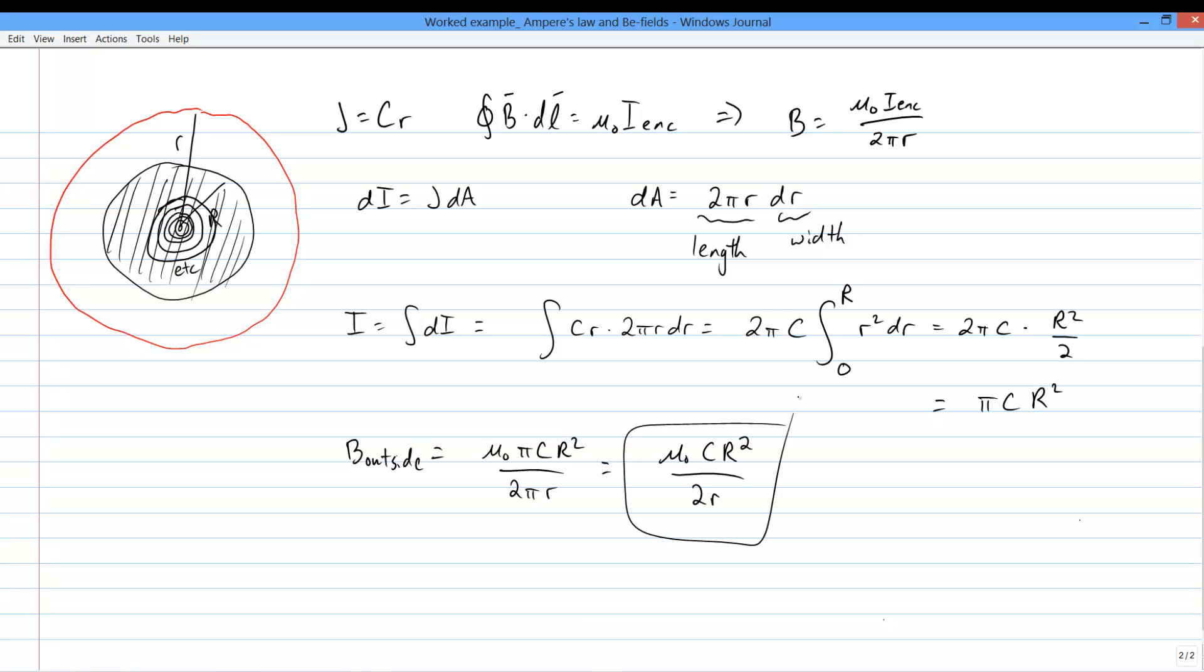That's the B at any point outside the wire. Notice that what we got was the same thing we would have gotten for a uniform current, but with a little extra work involved in getting the total I in terms of J. This is a common result. The field made by any cylindrically symmetric current, as long as you're outside that current, ends up looking just like the field made by a long, straight, uniform wire.